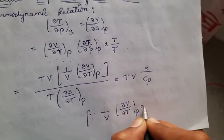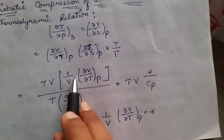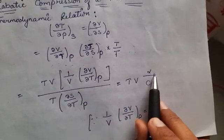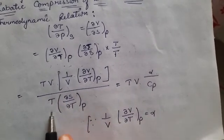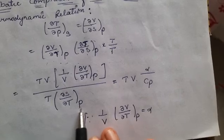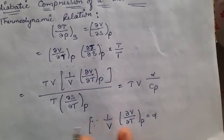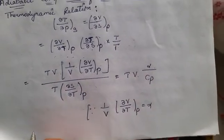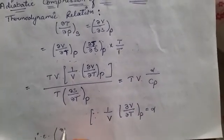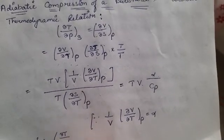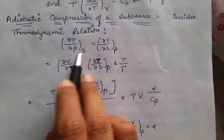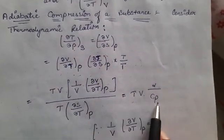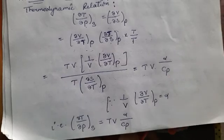Substituting alpha for that term and writing Cp for the specific heat at constant pressure, we substitute into the right-hand side of the relation. The result is: (∂T/∂P) at constant entropy equals T·V·alpha divided by Cp.